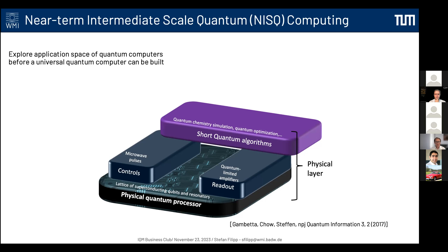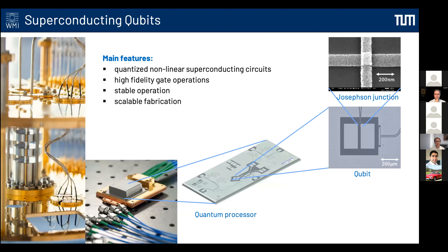We are not there yet. For logical qubits we currently get around 3% logical error, which is quite a lot. So we look for different techniques — not correcting but mitigating errors — to run algorithms already on the physical scheme, exploring applications that can be done before error correction comes into play. We like superconducting qubits because they give high fidelity gate operations. They are built on nonlinear superconducting circuits with a Josephson junction as the nonlinear element, operate stably, can be scalably fabricated, and run in dilution fridges.